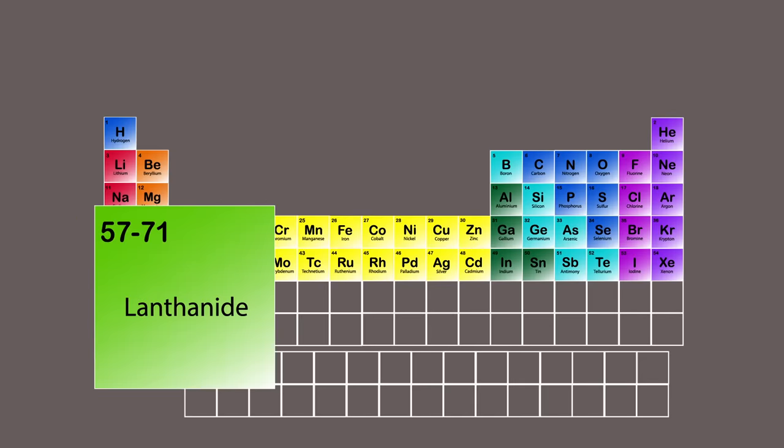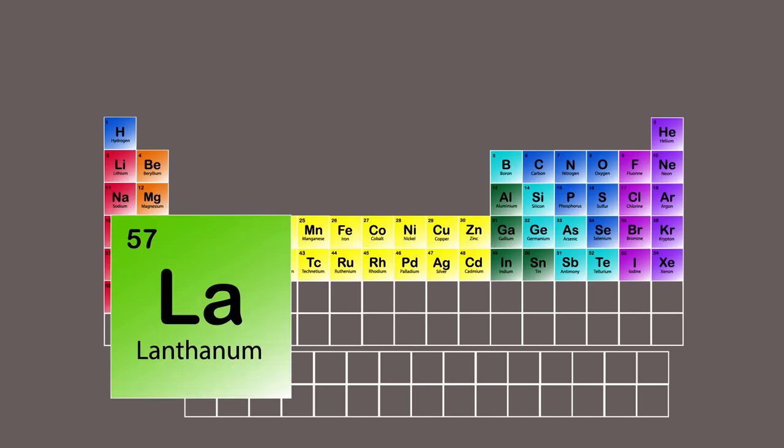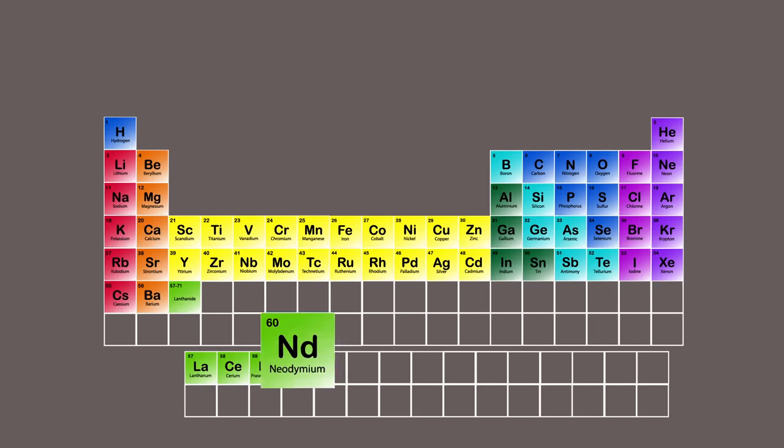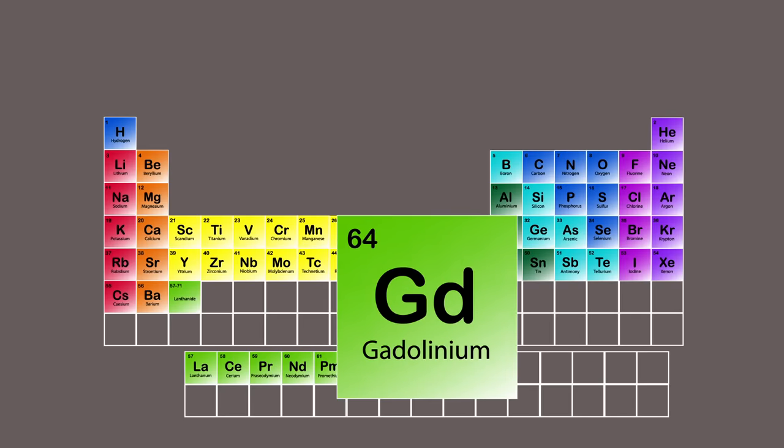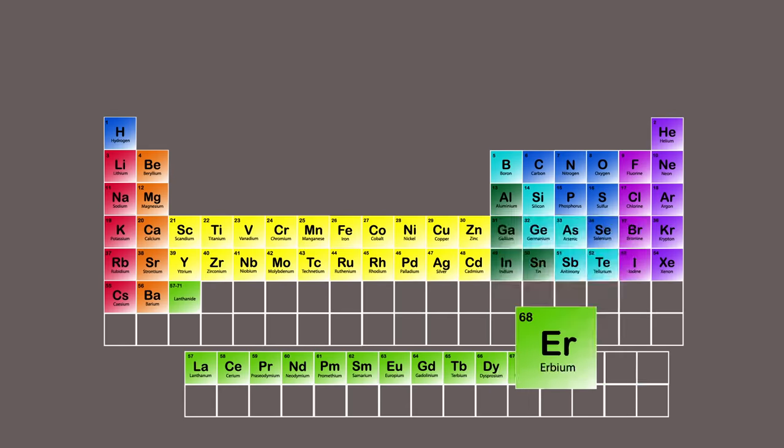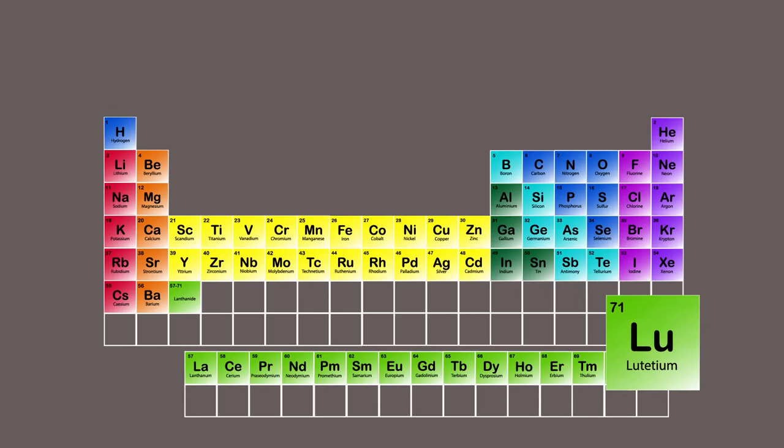Cesium, barium, and lanthanides begin. Lanthanum, cerium, praseodymium, neodymium, here's promethium, samarium, europium, gadolinium, terbium, dysprosium, holmium, erbium, thulium, ytterbium, lutetium.